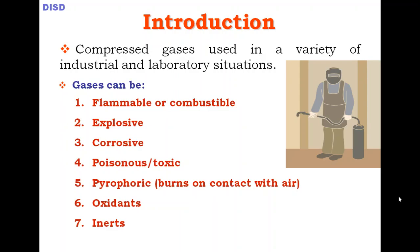The second type of gas is explosive. The third is coalesce. The fourth produces toxic gases. The fifth is pyrophoric, which works on contact with air. These are the types of gases. Additionally, there are oxidizing gases, inert gases, and pressure gases. So these are the types of gas cylinders.